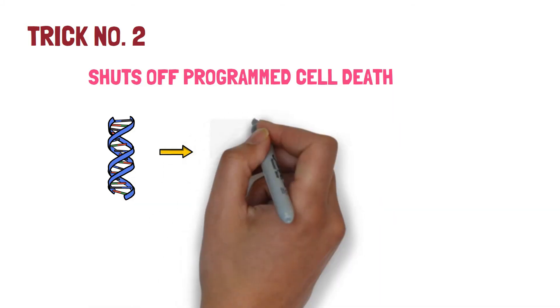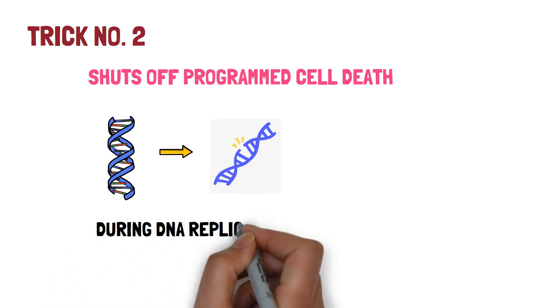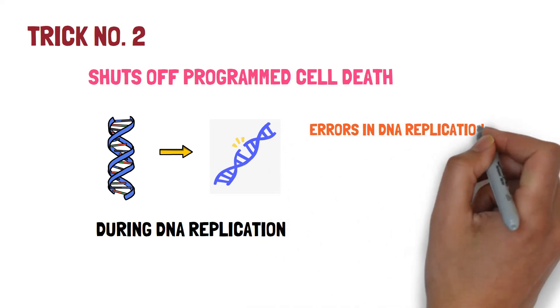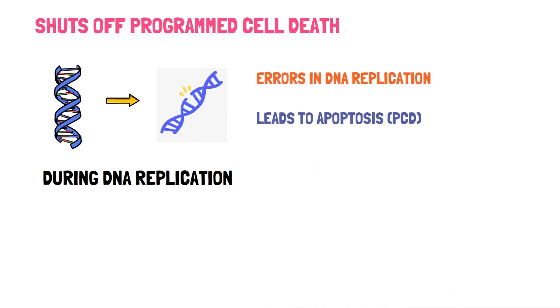These errors in the DNA replication process are handled by DNA repairs but if the errors are not corrected the cells senses that going further may lead to mutations in the cells and hence it undergoes apoptosis or programmed cell death.